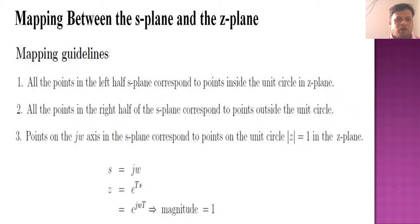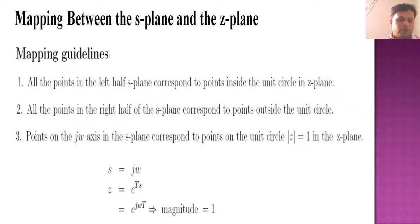These three guidelines are very important. When you draw a root locus or any graph using the s-plane, the left half of the s-plane corresponds to points inside the unit circle, and the right half corresponds to points outside the unit circle. Points on the j-omega axis correspond to points on the unit circle, mod z equal to 1, in the z-plane. We can understand that the z-plane uses a unit circle, while the s-plane uses x-axis and y-axis. So s equals j-omega, and similarly z equals e^(Ts), which can be written as e^(jωT) where the magnitude equals 1.